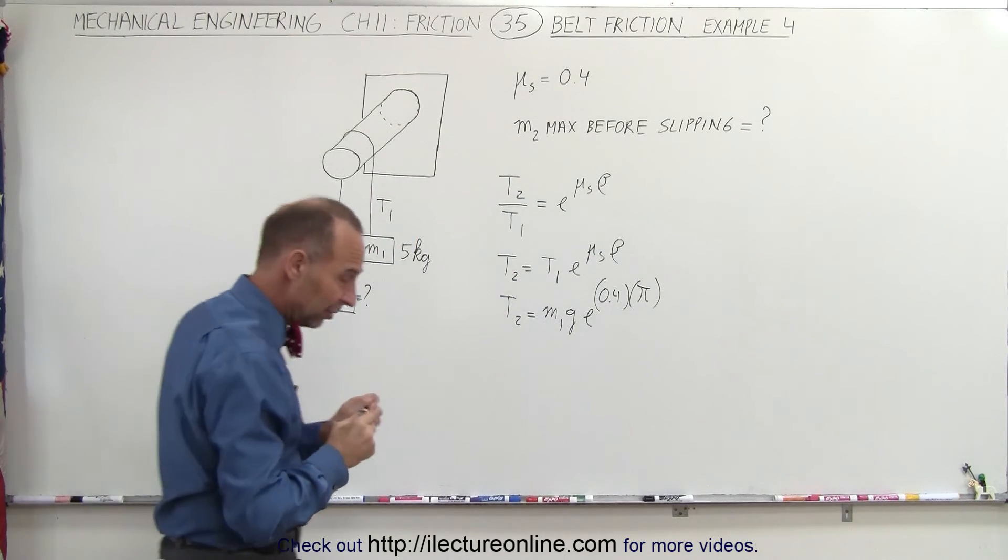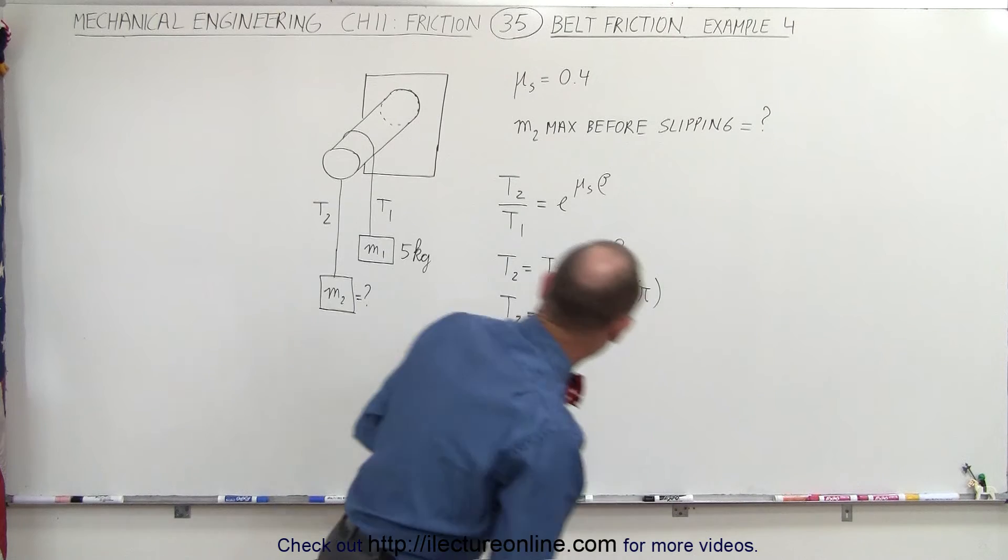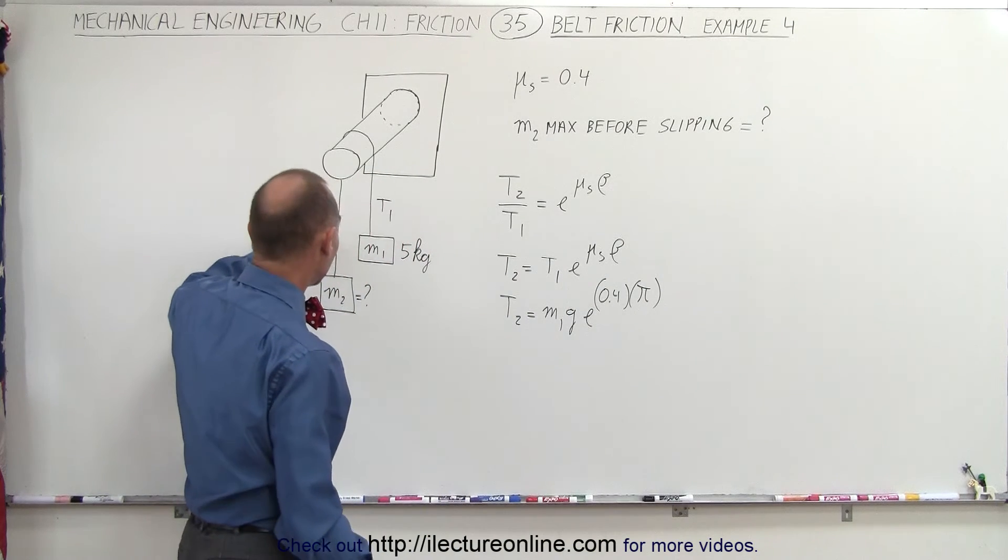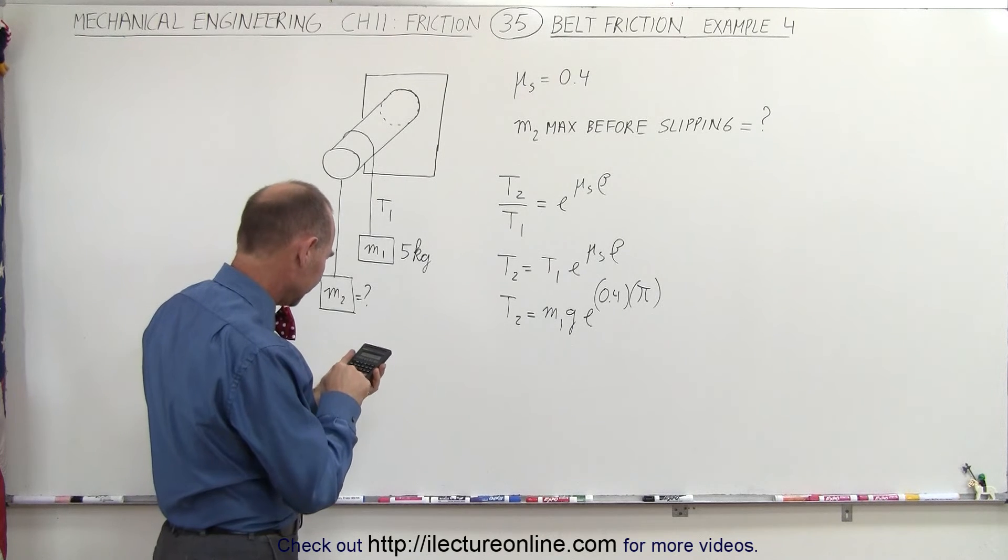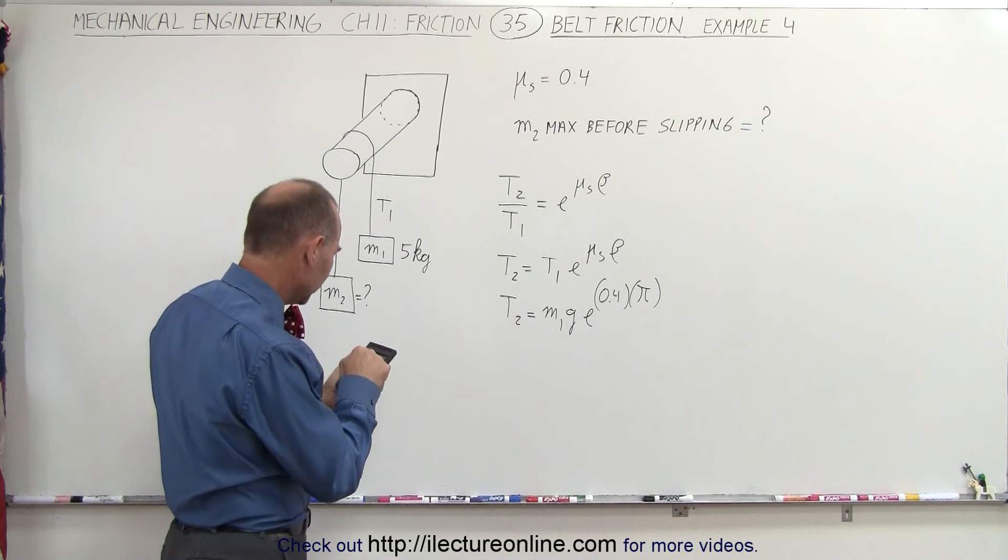That will tell us the tension we can place, well, the tension that can be on this side before everything starts slipping, so 0.4 times pi, make that the exponent.